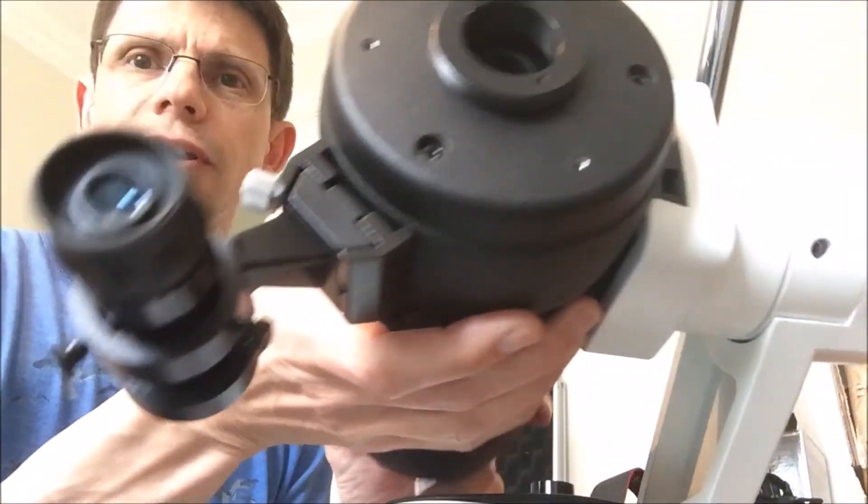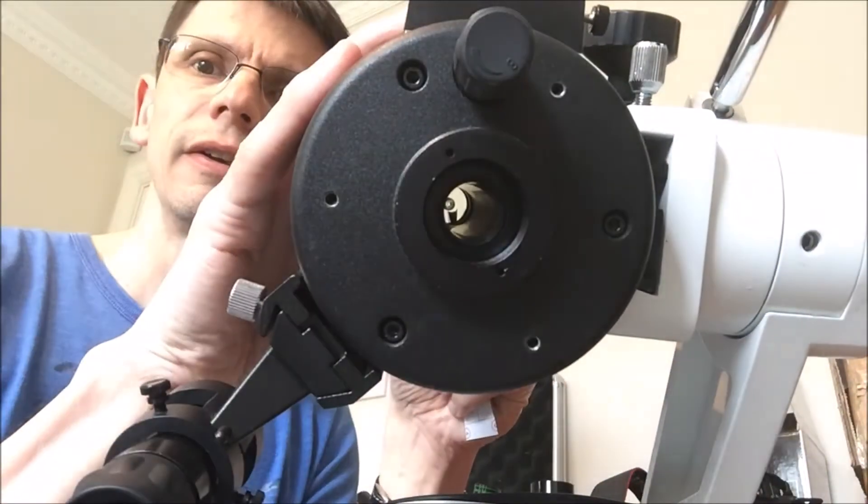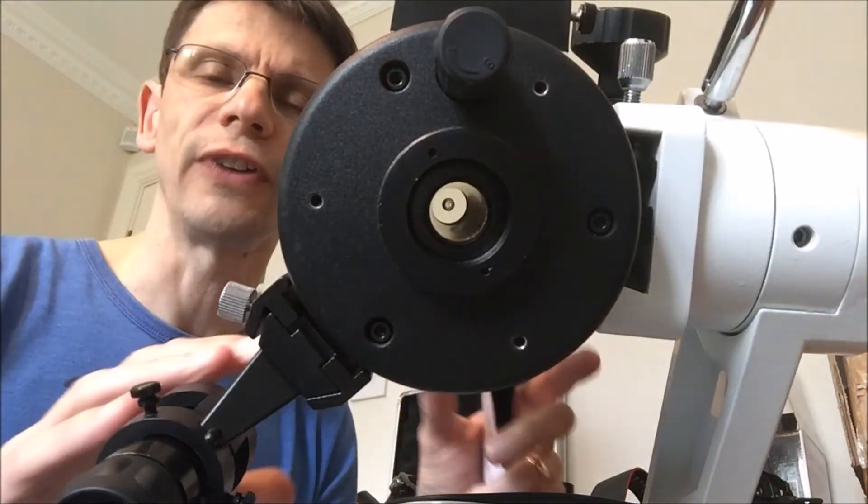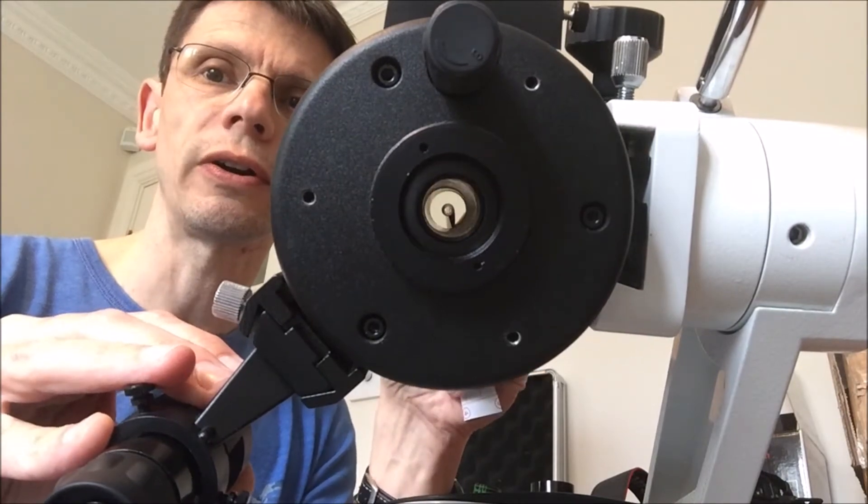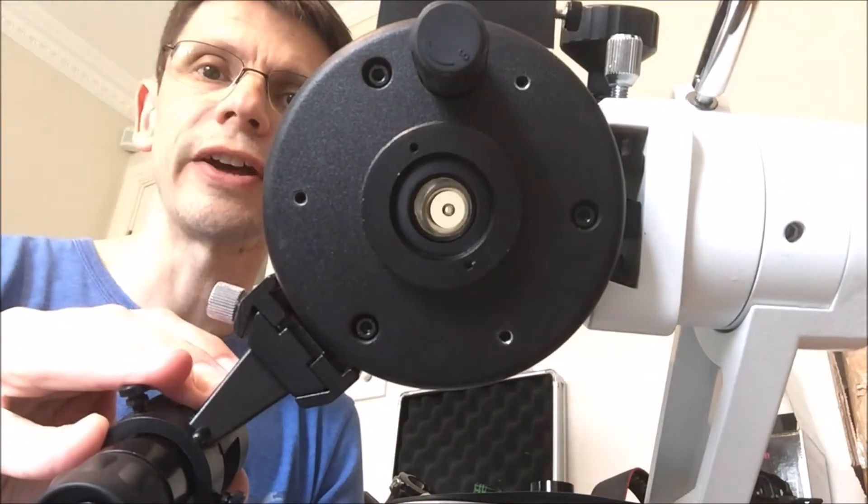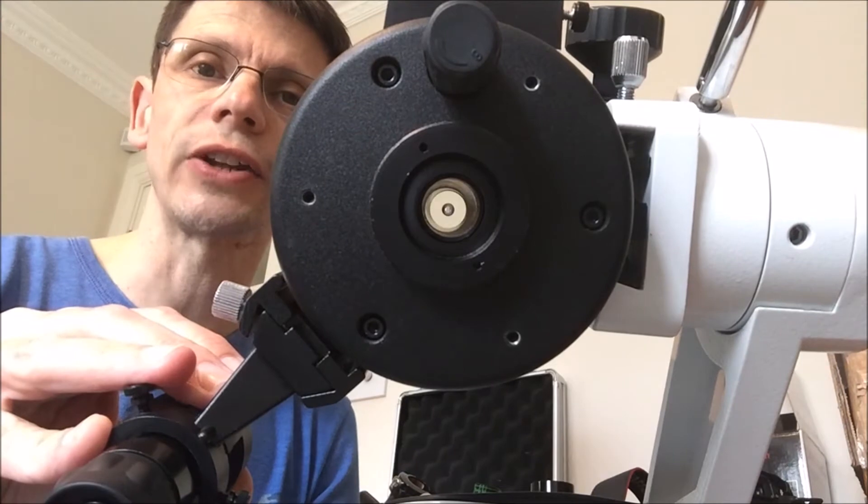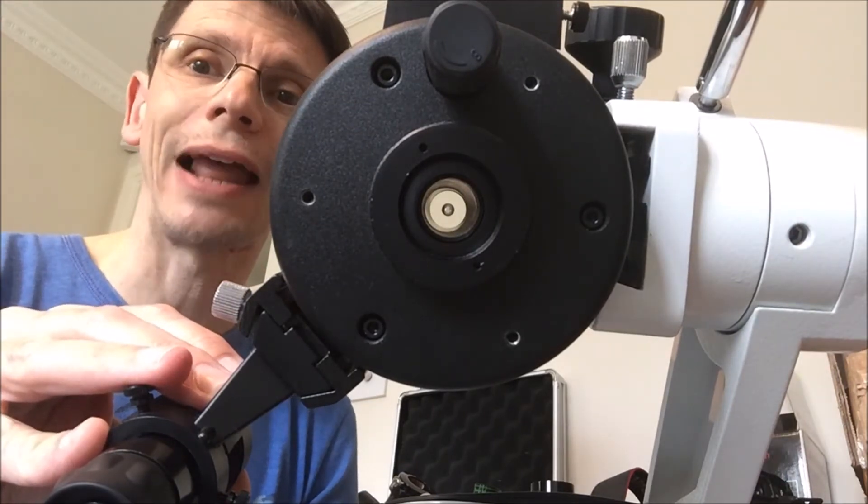Okay, so if we look from the eyepiece end, hopefully if I move the scope left and right a bit, you can see as we look along that tube that there is some reflection from the inside of that tube, basically because it is not matte black.